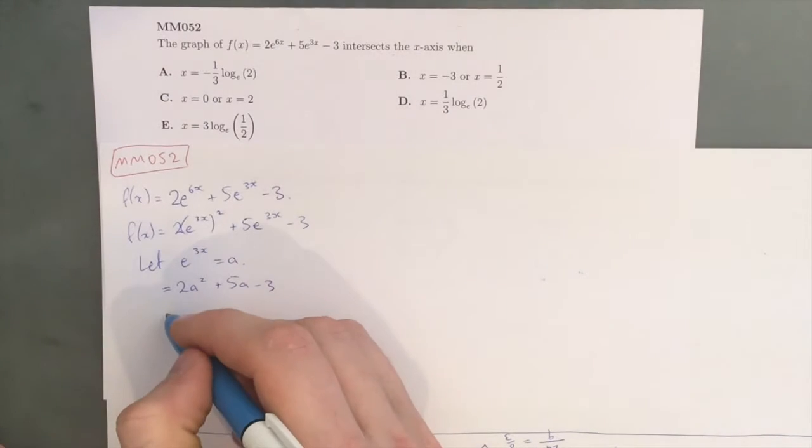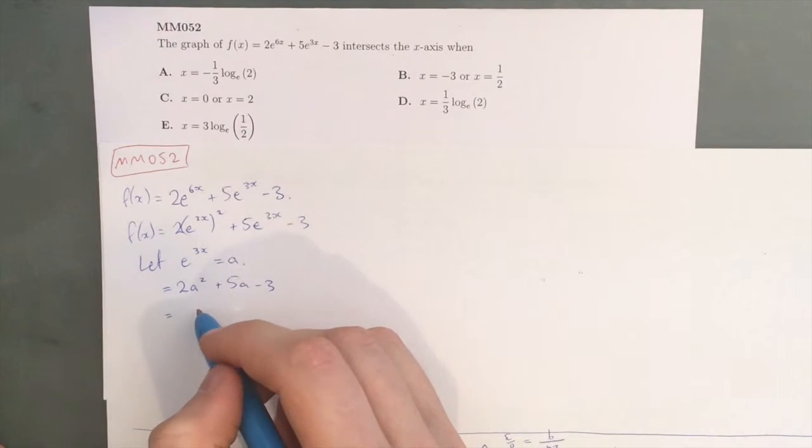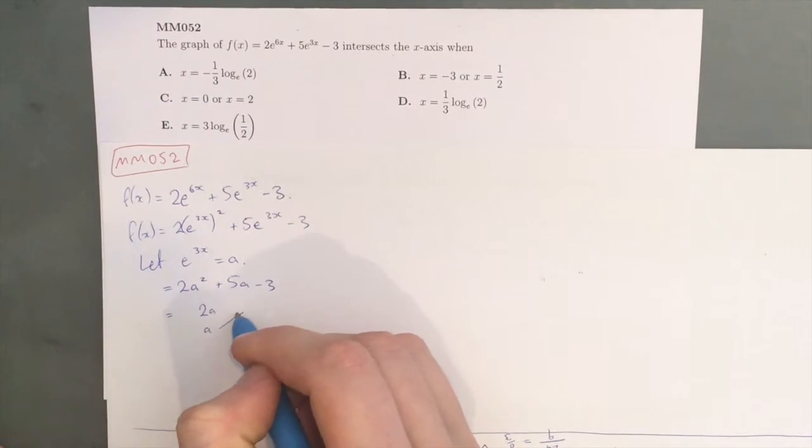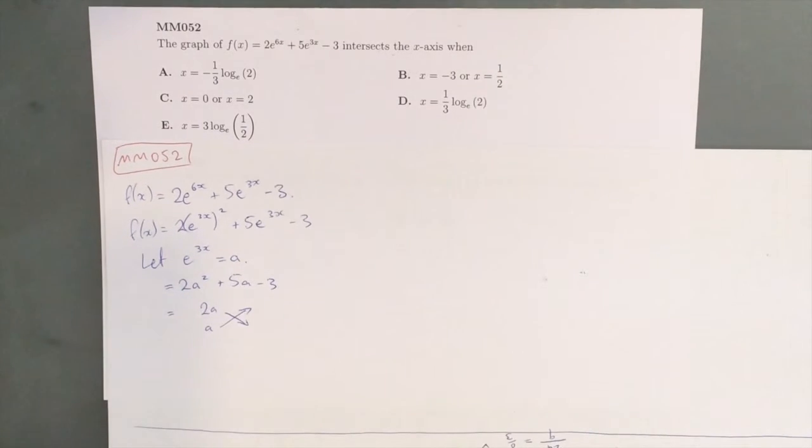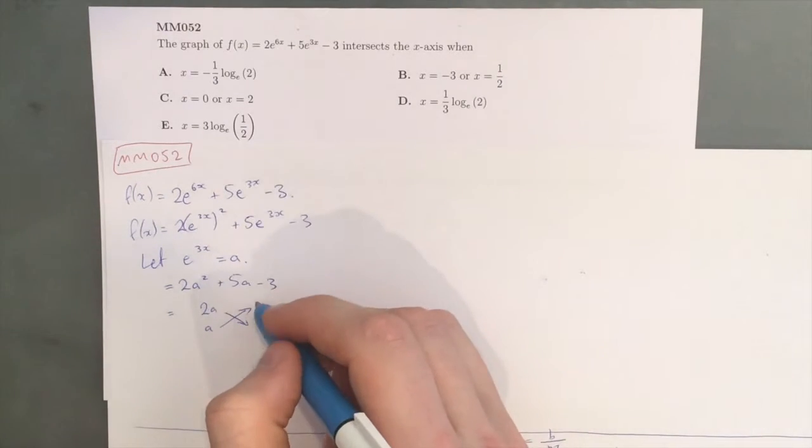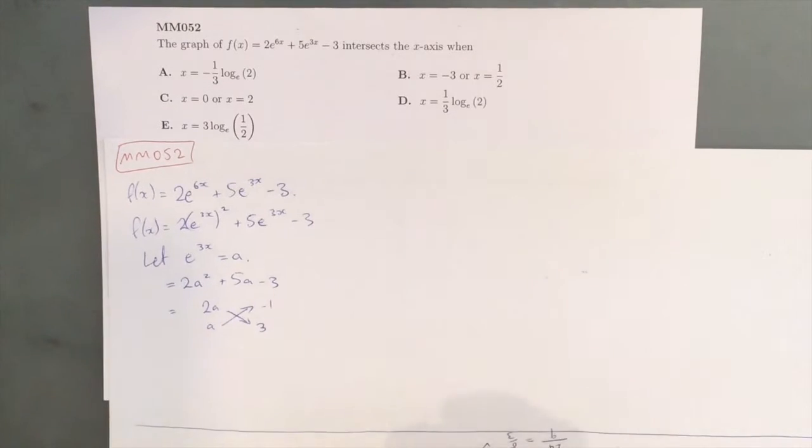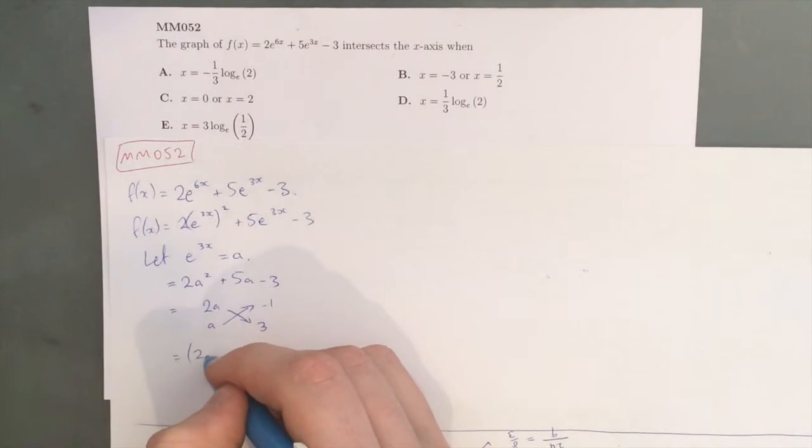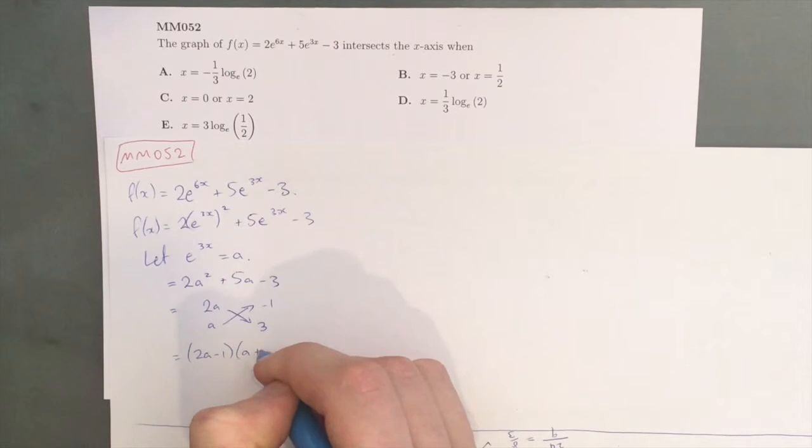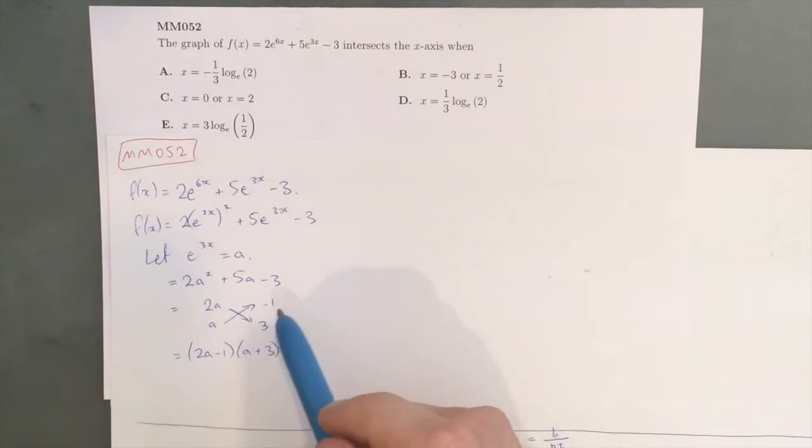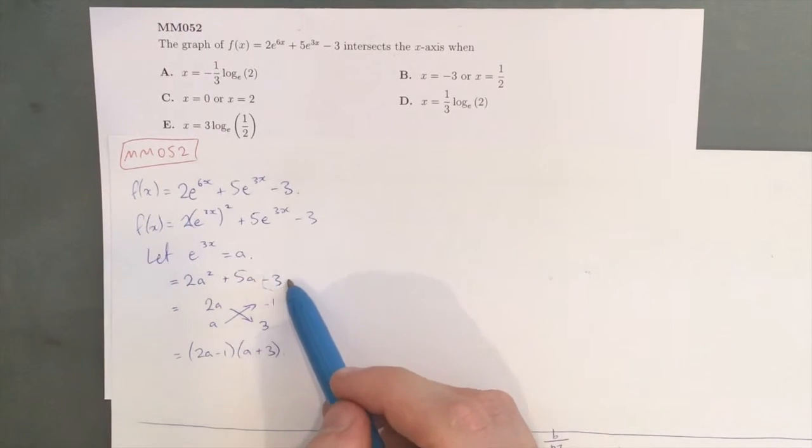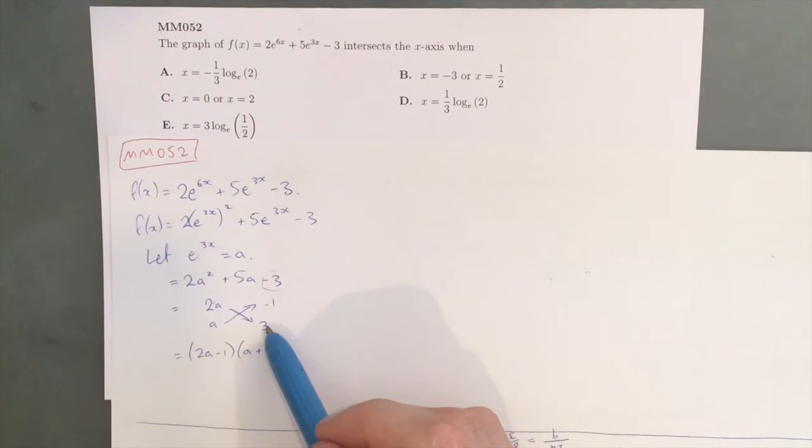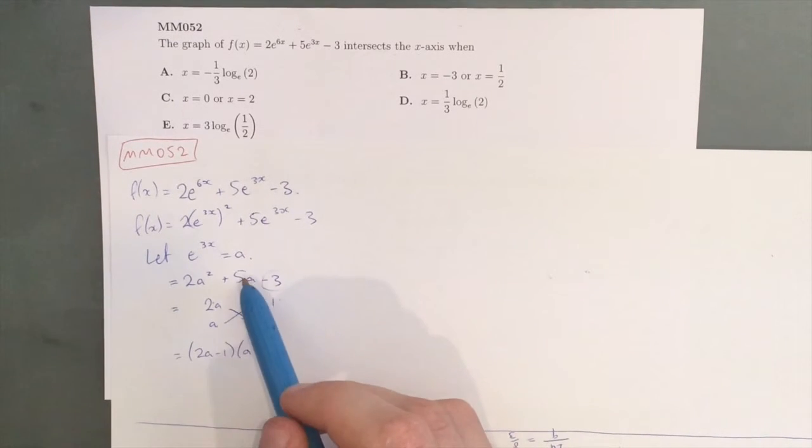Where we go from here is we need to factorize. So, we do our cross method. 2a times a is 2a^2, and then we get -1 here and 3 here to give us (2a - 1)(a + 3). And how we've done that is -1 times 3 is -3, and then 2a times 3 is 6a, take away a is 5a.